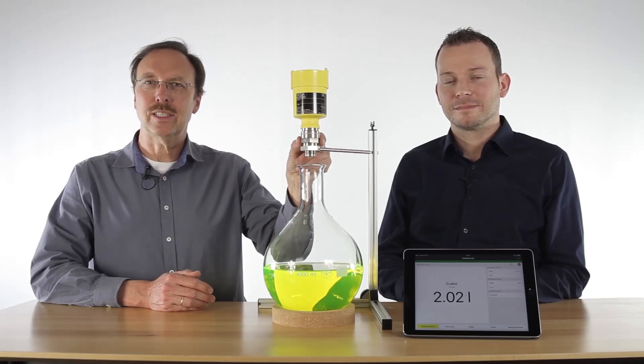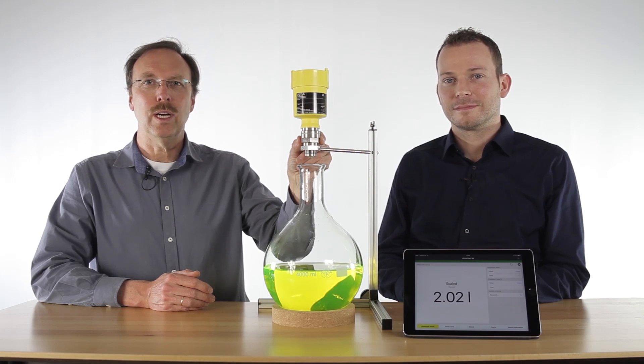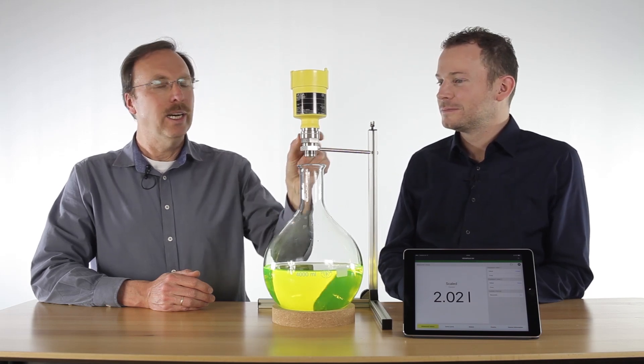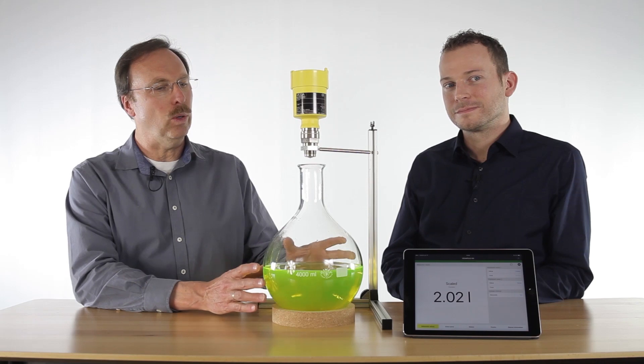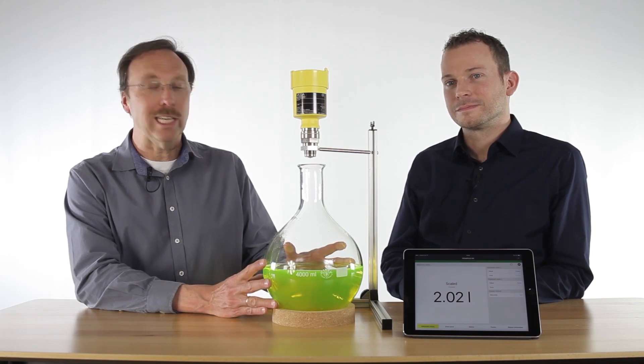With the small process connection of the Vega Pulse 64, an 80 gigahertz radar, it's possible to mount the sensor also on these small glass bottles.